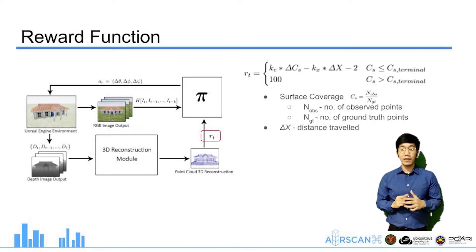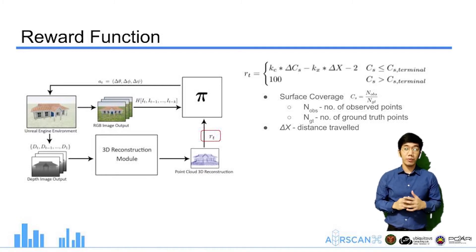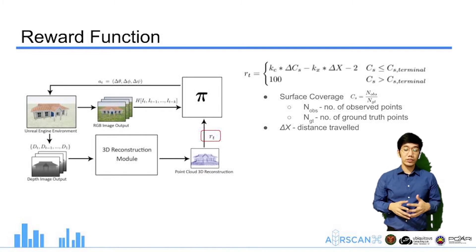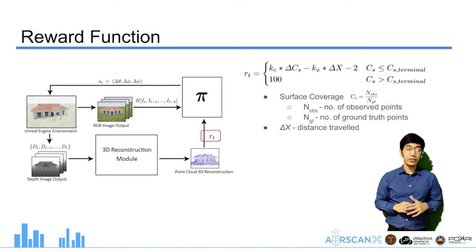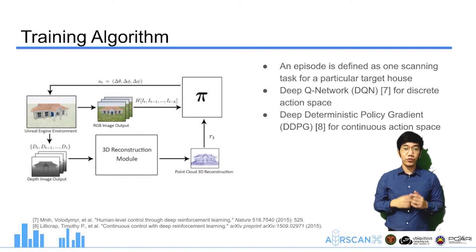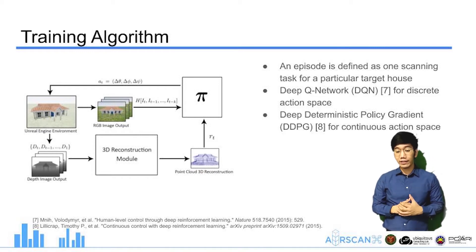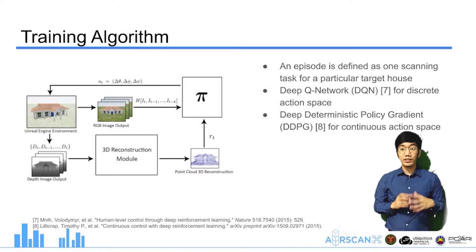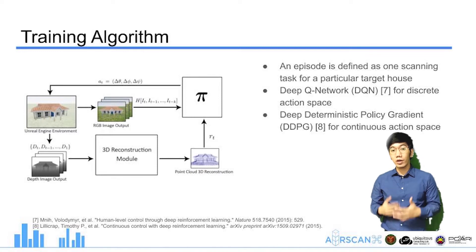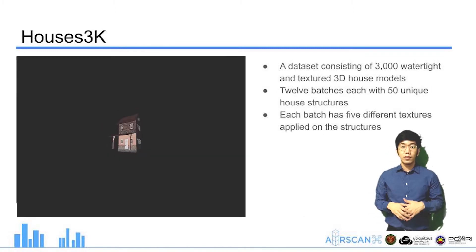Rewards are computed based on the 3D model. The agent gains positive reward based on the increase of surface coverage, which is the number of observed points over the total number of ground truth points. We also introduced negative rewards for each additional step and proportional to the distance traveled, to encourage the agent to minimize the path. The discrete action space version is based on Deep Q-Network (DQN), while the continuous action space version is based on Deep Deterministic Policy Gradient (DDPG).